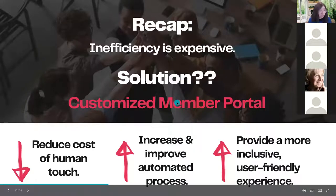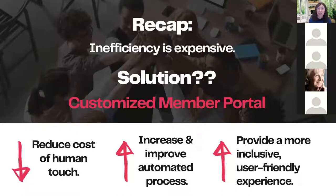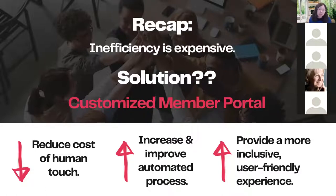To recap: inefficiency is expensive. When members are frustrated and can't engage or find benefits when they want to, we're losing members and it costs 10 times as much to find new ones. The solution is a member portal — a place where members can go on demand when they're interested in connecting, professional development, updates, tools, and community. Much easier than sending emails or hoping they find you other ways, or waiting for infrequent events.